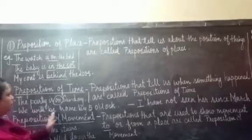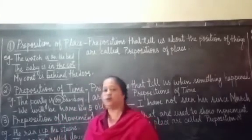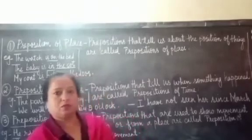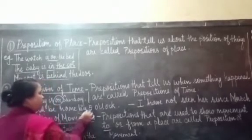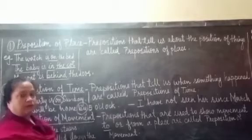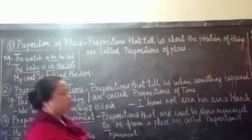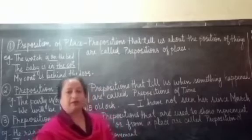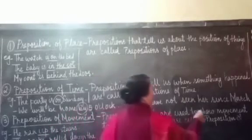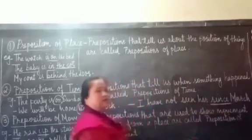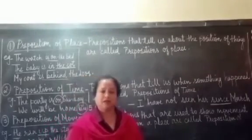Next: He will be home by five o'clock. We have a specific time — five o'clock — and we learn when he is going to be home. So 'by' is the preposition of time that tells us when he will be home. Next: I have not seen her since March. Here 'I' is the pronoun and March is the specific month. The word 'since' describes or tells us since when we have not seen her.